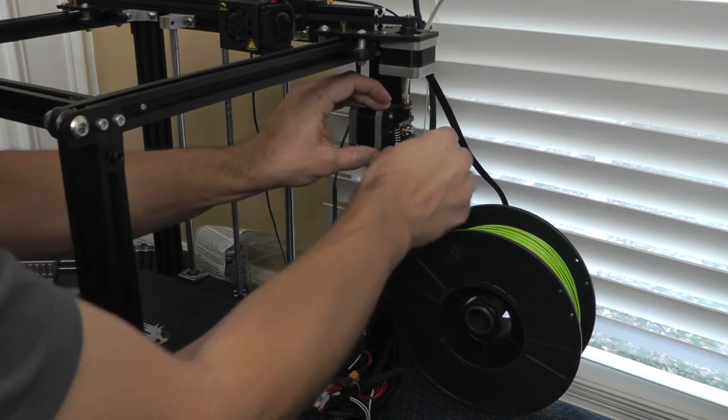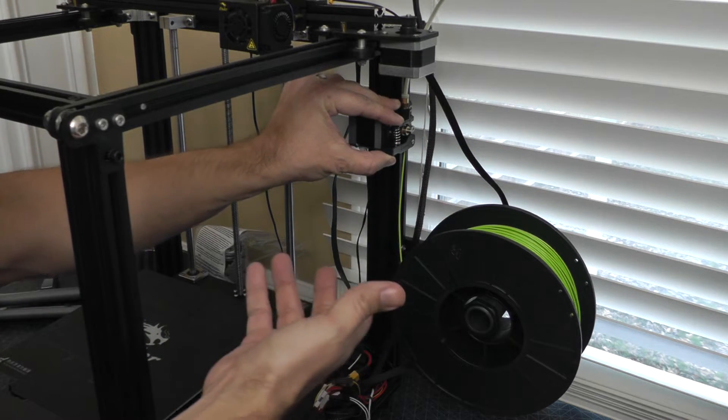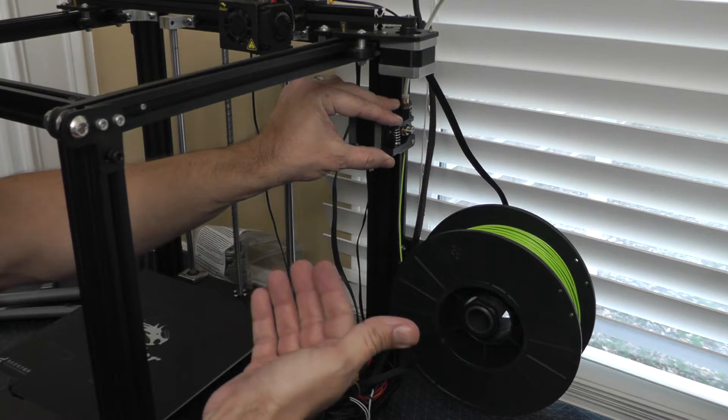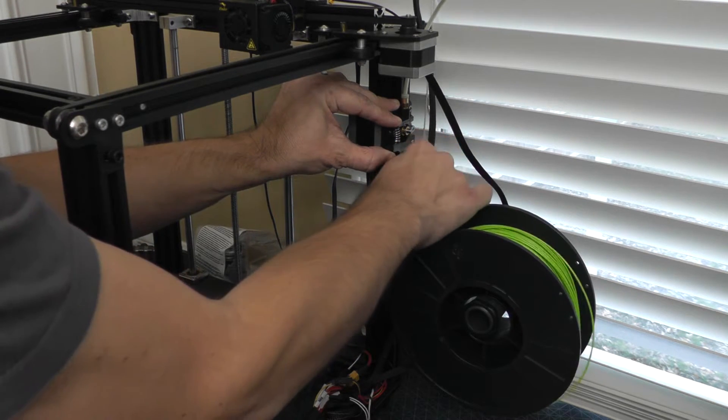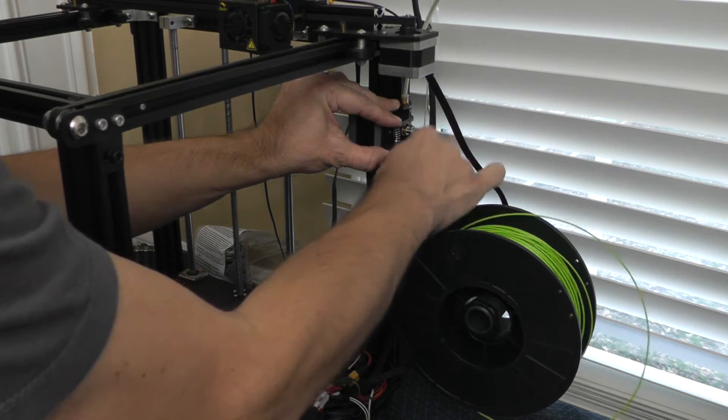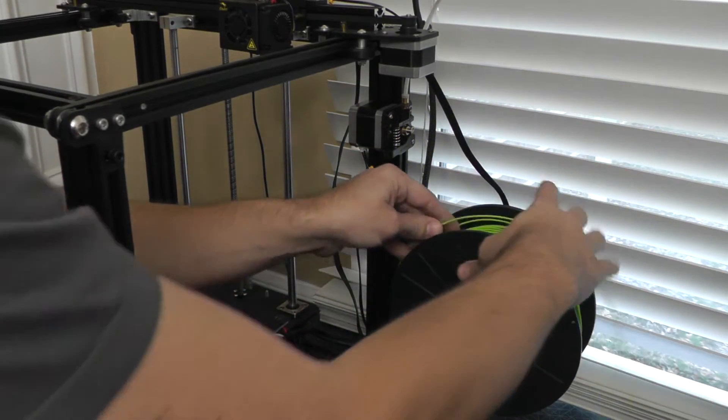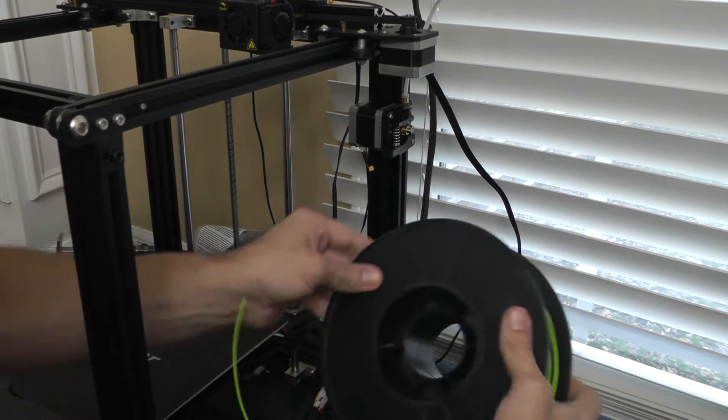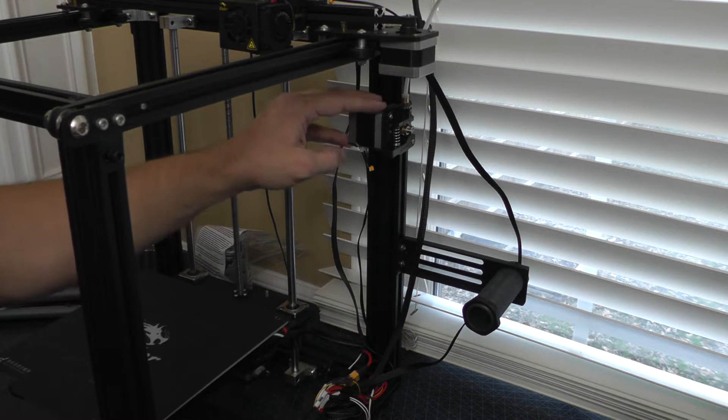So first step, what we're going to do is we need to take out the existing filament. So if it is already in the hot end, you're going to actually have to heat the printer up, do a push and pull to get the filament out. But once you've got the filament coming out, you can just pull it all the way. At that point, let's take off the spool to get it out of our way.